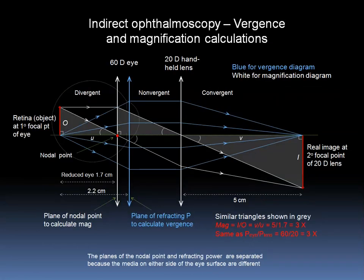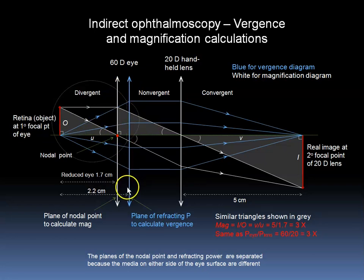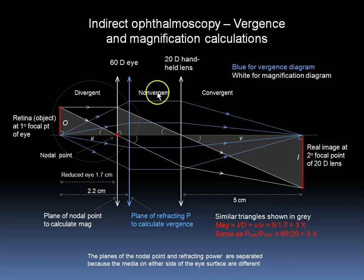Here we see a diagram explaining the vergence and magnification calculations in indirect ophthalmoscopy. The retina is the object of interest. We use two different planes to calculate magnification and vergence: the plane of the nodal point to create similar triangles and calculate magnification, and the plane of vergence to calculate vergences. The two planes do not overlap because the light between the object and the first optical system is traveling through an index of refraction different than the light leaving this first optical system and going into the air.